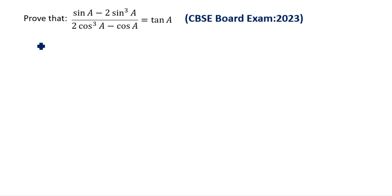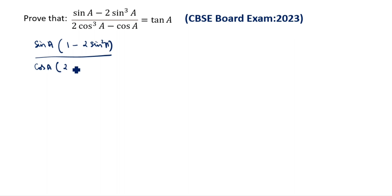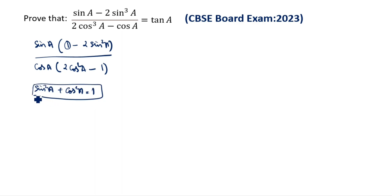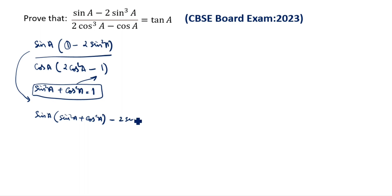We need to prove this. First, we will take sin A outside: sin A times (1 minus 2 sin square A), divided by cos A taken outside times (2 cos square A minus 1). Now we will split 1, so sin square A plus cos square A is equal to 1.